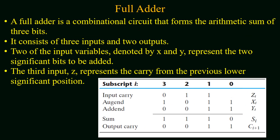A full adder is a combinational circuit that performs the arithmetic sum of three bits. The circuit has three input bits and two output bits. Among the three inputs, two bits are the addend and augend, denoted by x and y, and the third input z represents the carry from the previous lower significant position.